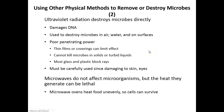Ultraviolet radiation is a form of ionizing radiation that damages DNA by causing thymine dimers. Your DNA is composed of four nucleotides: guanine, cytosine, adenine, and thymine. A thymine dimer occurs when two thymines on the same strand of DNA attach to each other instead of to the adenine on the complementary strand. This does not allow the DNA to work properly — you're unable to transcribe or replicate it correctly, which kills the microbes.